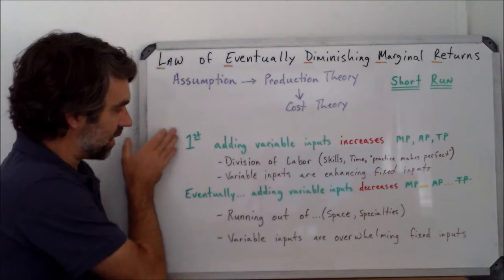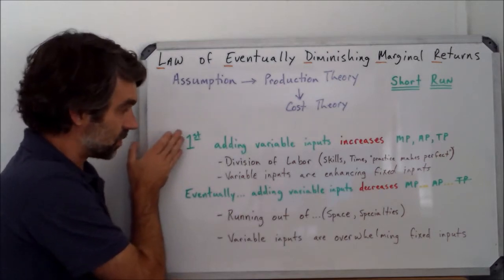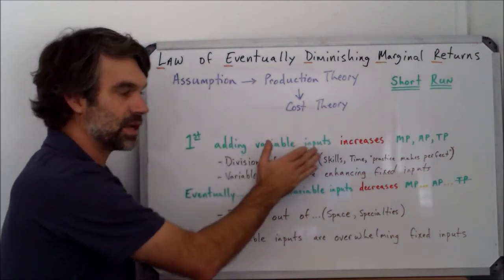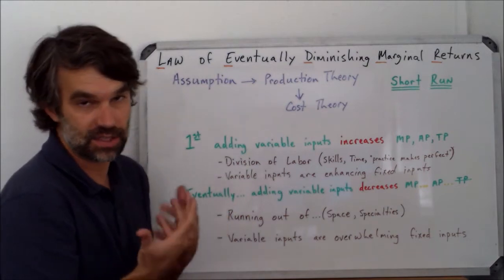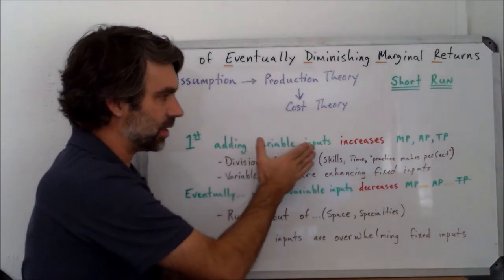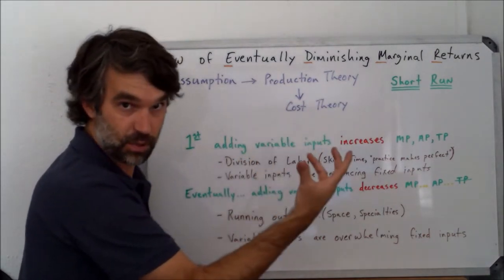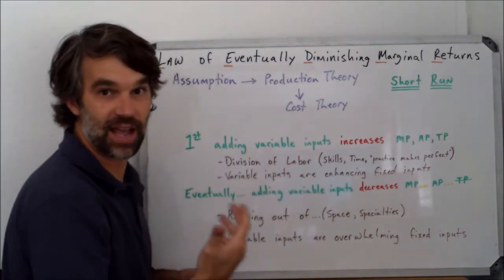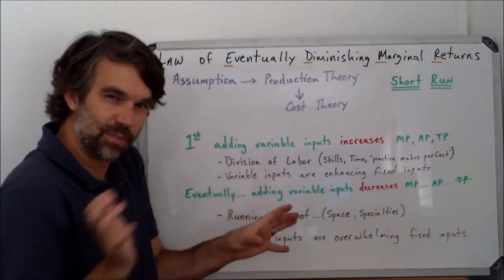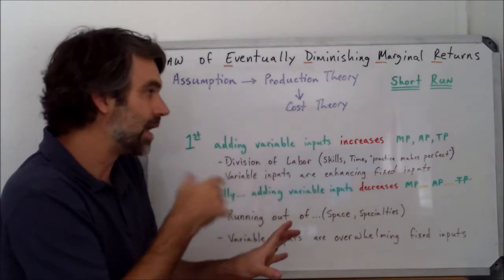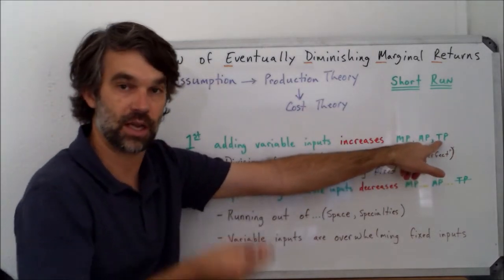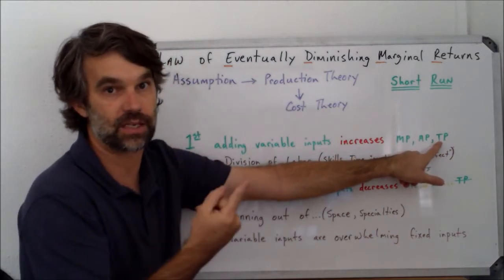So what this theory gets to is saying that at first, so this is before the 'eventually', as we add variable inputs—typically we'll talk about something like labor because it's an easy example, but it really could be anything—as we add variable inputs to the fixed inputs, we'll see increasing marginal production, average production, and total production. And all of those happen at the same time and together.